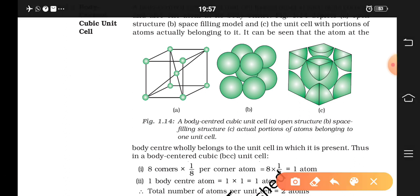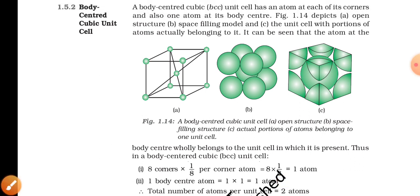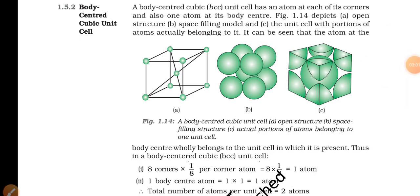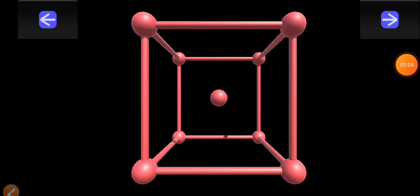The second contribution is from the body centered atom. As we have learned, it belongs wholly to that particular unit cell, so its contribution is one. One body centered atom multiplied by one gives you one atom. Therefore, the total number of atoms per unit cell in a body centered cubic unit cell is two.